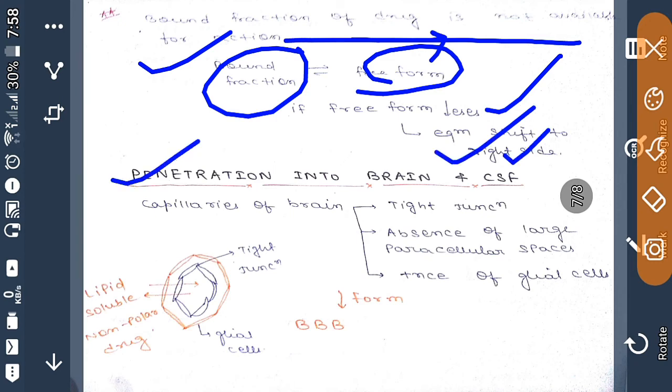We will discuss penetration of drugs into brain and CSF. Capillaries of brain have three important characteristics which make them different from other capillaries. First one is the presence of tight junctions, the second one is absence of large paracellular spaces, and the third one is presence of glial cells. As you can see in this diagram, tight junctions are present along with glial cells.